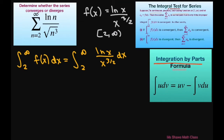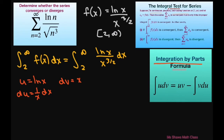So we're going to let u equal ln of x, and du equals 1/x dx. dv is going to be x to the power of negative 3 halves, so v equals negative 2 times x to the power of negative 1 half.